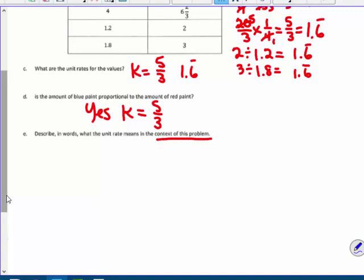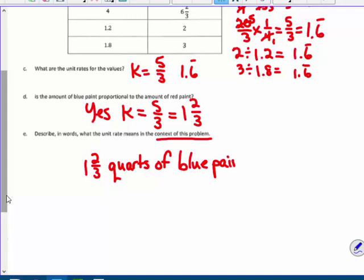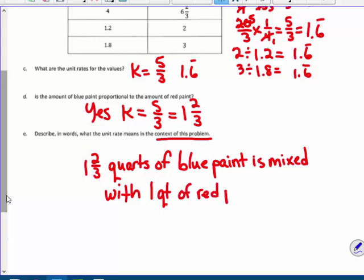Describe in words what the unit rate means in the context of this problem. Well, I've got to talk about the two things that are varying here, the variables, which are blue paint and red paint. So, 1 and 2/3, which is 5/3, which is also that 1.6666. 1 and 2/3 quarts of blue paint, so there's my first variable, is mixed with 1 quart, or for each 1 quart of red paint, 1 quart of red paint. So, it's a 5/3 to 1 ratio. 5/3 of quarts of blue paint is mixed with 1 quart of red paint each time. That's what it means.